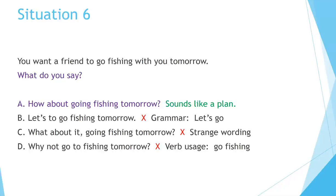The best answer is A: How about going fishing tomorrow? Sounds like a plan. What's wrong with the others? B. Let's to go fishing tomorrow. — The grammar is incorrect. 'Let's go fishing.' C. What about it? Going fishing tomorrow. — This is very strange wording. 'What about going fishing tomorrow?' would be better. D. Why not go to fishing tomorrow? — The verb usage is incorrect here. 'Go fishing' is correct.